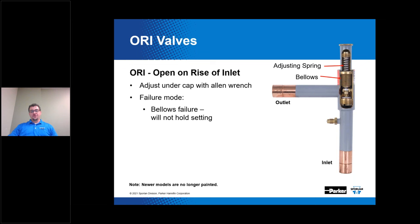Depending on the refrigerant and application, you don't want to use the ORI for R410A refrigerant because it doesn't have a high enough maximum operating pressure. For R410A, we recommend our LAC-HP valve specifically intended for that application. Regarding installation: because the bellows is a flexible seal and responsive, it is susceptible to failure due to overheating. Make sure you don't overheat this valve when soldering it into the system, because a leaky bellows can impact the valve setting and can go unnoticed for extended periods of time.